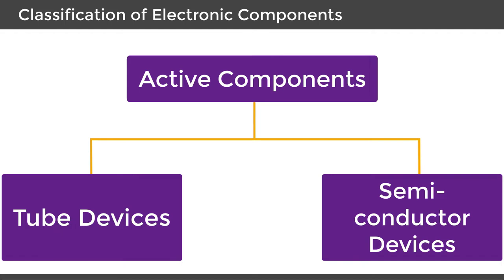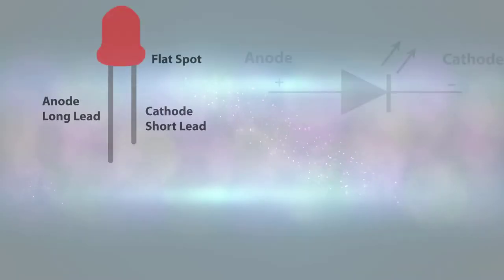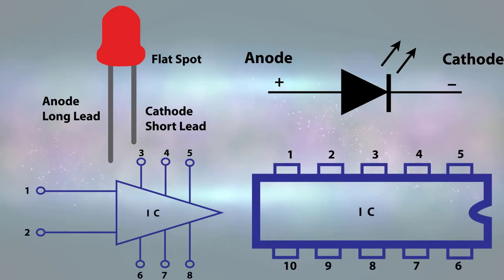Due to many advantages of semiconductor devices, they are replacing tube devices in many electronic applications. These components rely on a source of energy and are able to control the electron flow through them.